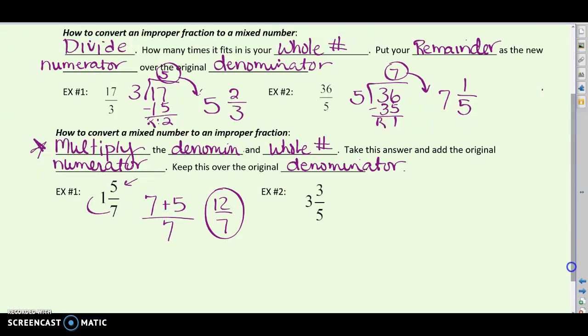How about three and three-fifths? Well, those three holes each have five pieces. So, when I multiply those, that gives me 15 pieces right there, plus the three that I already had on top as my numerator. And we're talking about fifths. So, 15 plus three would give me 18-fifths. 18-fifths is equal to three and three-fifths.